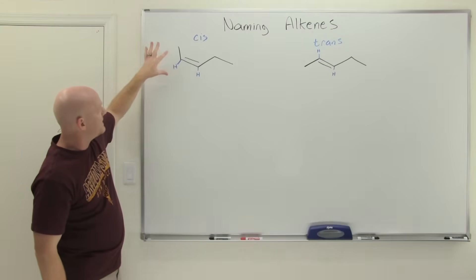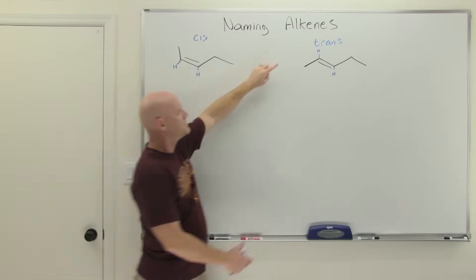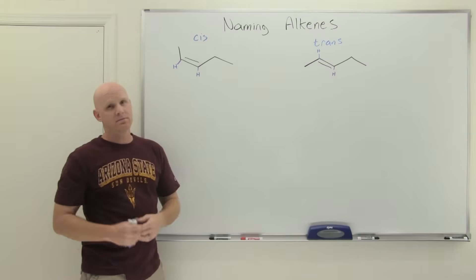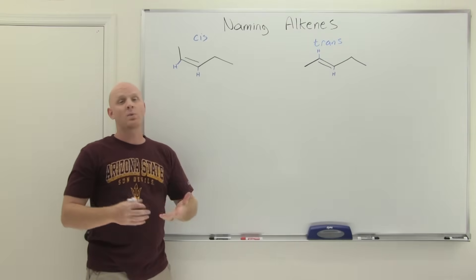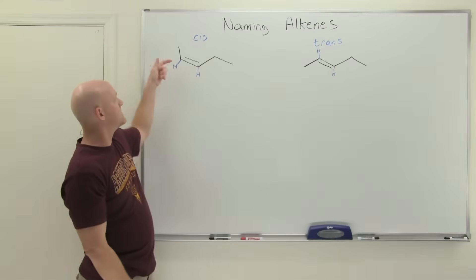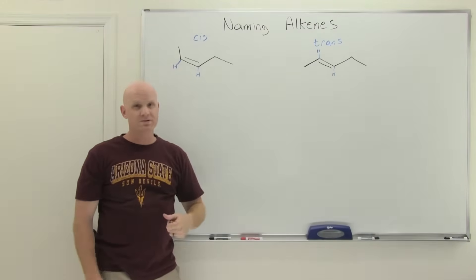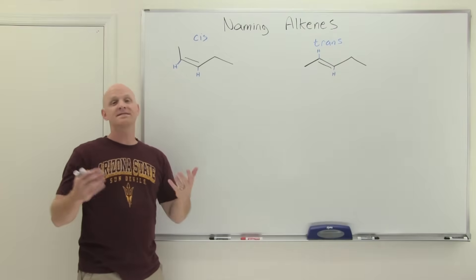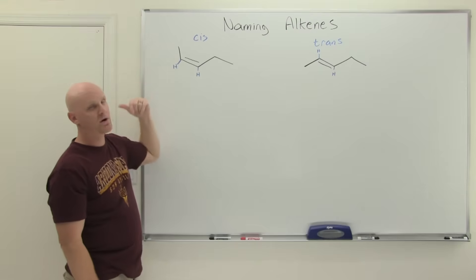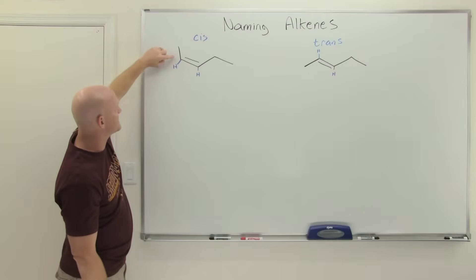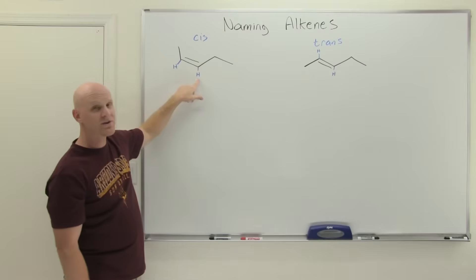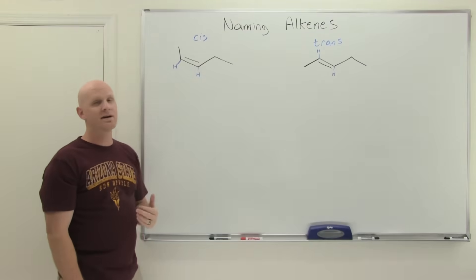Not all alkenes exhibit cis-trans isomerism. As long as both sp2 carbons of the alkene are bonded to two different groups, and it's not part of a small ring, it will exhibit cis-trans isomerism. Instead of cis and trans, we use E and Z — from the German words entgegen and zusammen. E is analogous to trans and Z is analogous to cis. The mnemonic: Z means your two like-priority groups are on the same side. You assign priorities to the two groups on each sp2 carbon the same way you assign R and S — using Cahn-Ingold-Prelog rules. Carbon has a higher atomic number than hydrogen, so it gets higher priority.